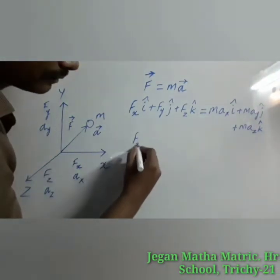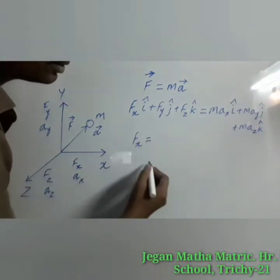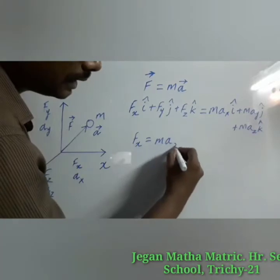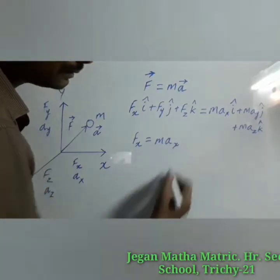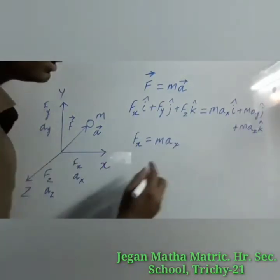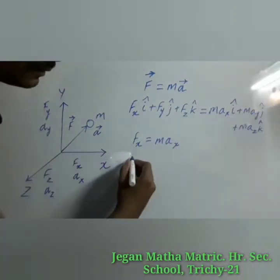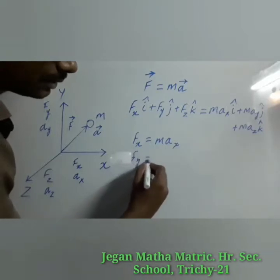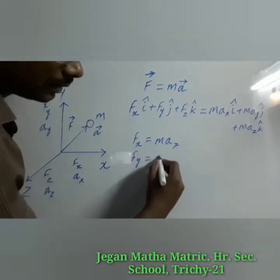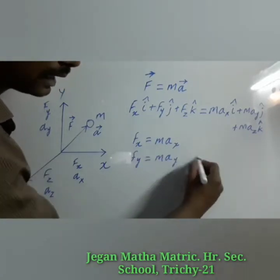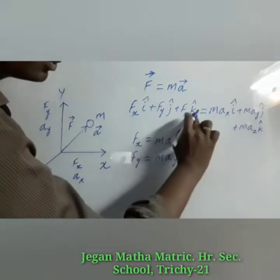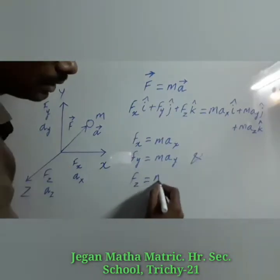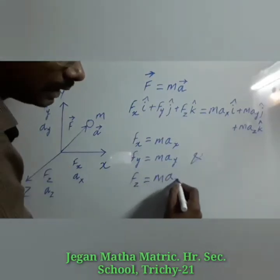Comparing i-cap components: Fx = m·ax. Comparing j-cap components: Fy = m·ay. And the last component: Fz = m·az.